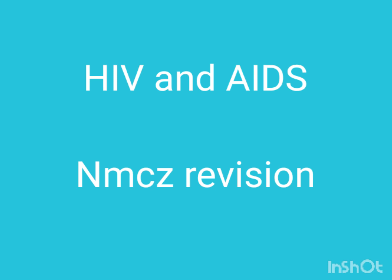Objective number four covers the preventive measures of HIV and AIDS. Number one: getting tested and treated for STDs. Number two: limiting your number of sexual partners. Number three: using condoms every time you have sex. Number four: choosing less risky sexual behaviors. Number five: getting tested for HIV and AIDS. Additionally, talk to your healthcare provider about pre-exposure prophylaxis, and avoid sharing injections when administering drugs or any other form of injection.